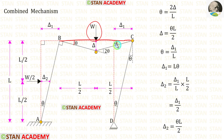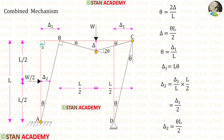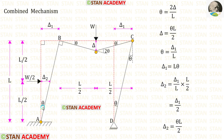In beam BC we have a central point load, so if this angle is θ, this angle also should be θ, and this angle will be θ + θ = 2θ. In this frame both columns have the same height L, so the angles at C and D should also be θ.